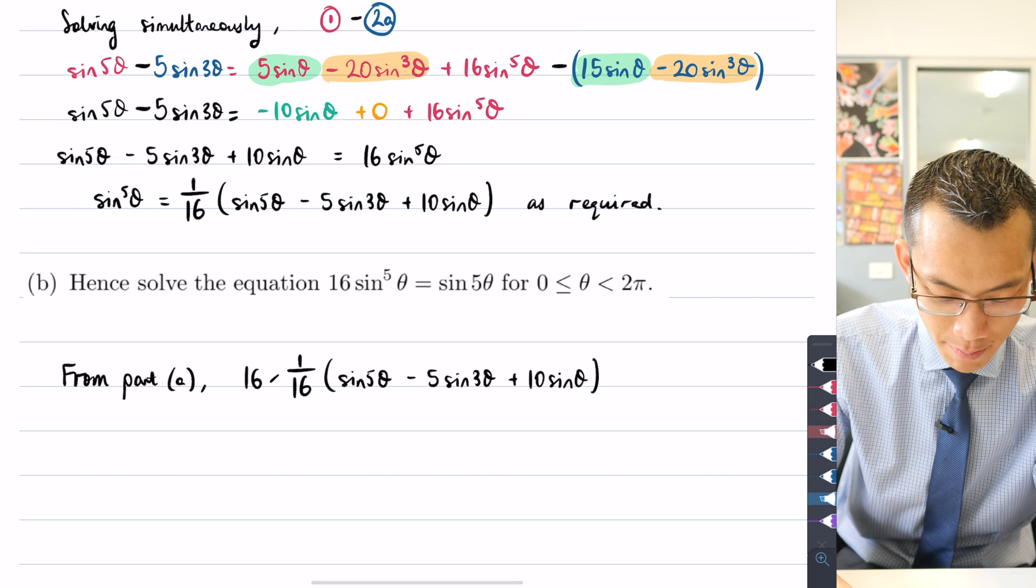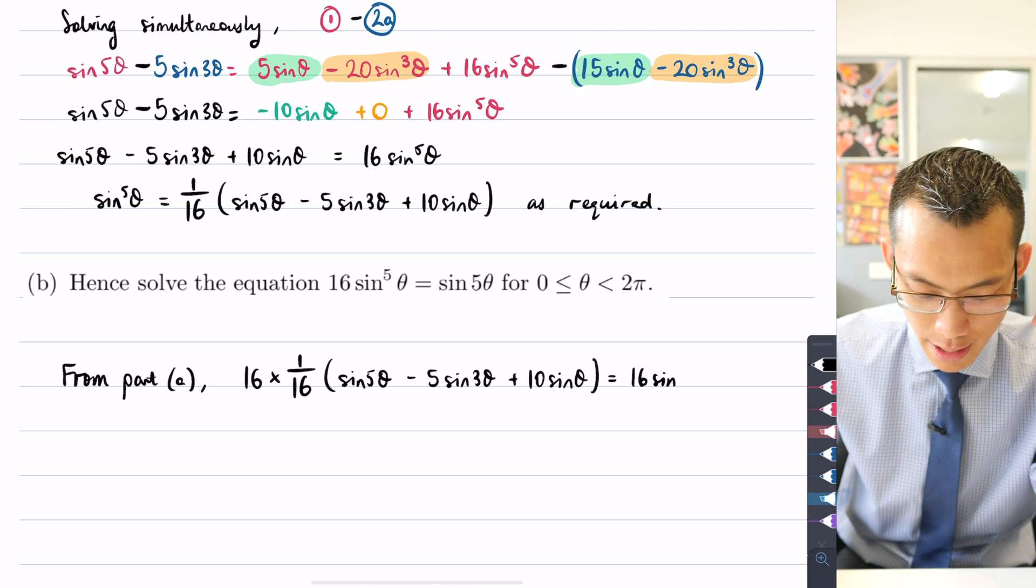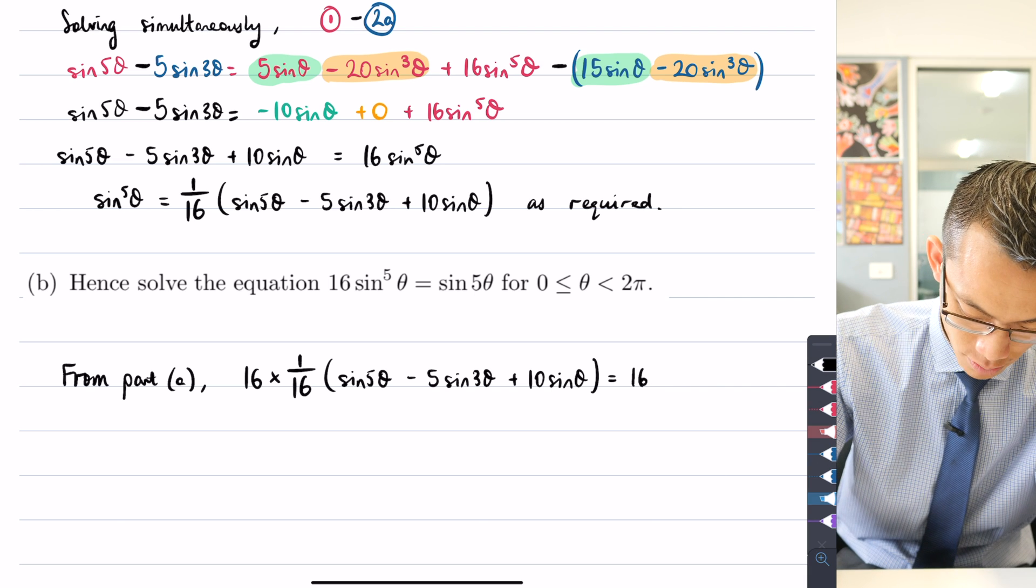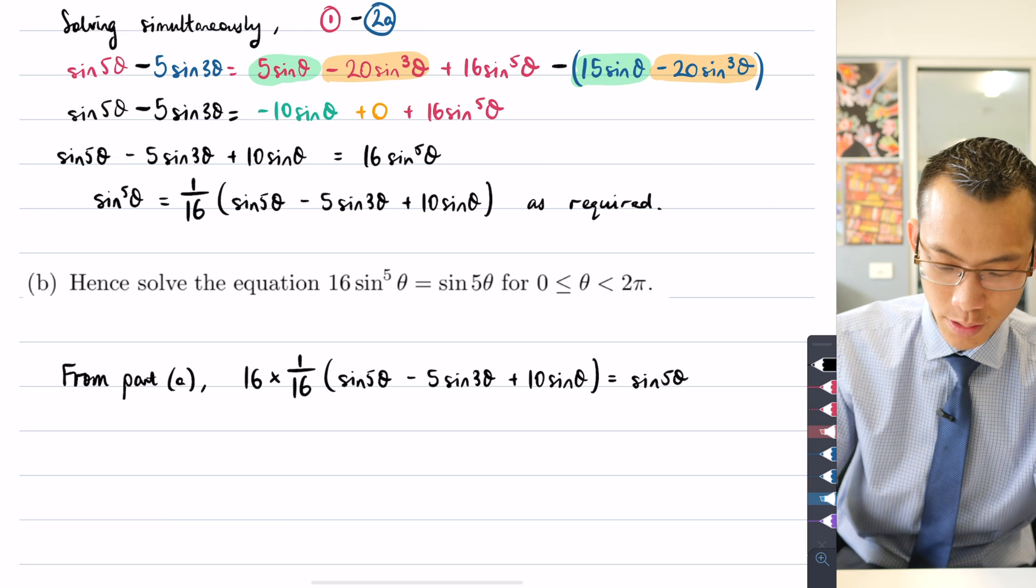So I'm multiplying by this and that is equal to sin 5θ. So you can see what I've done here.